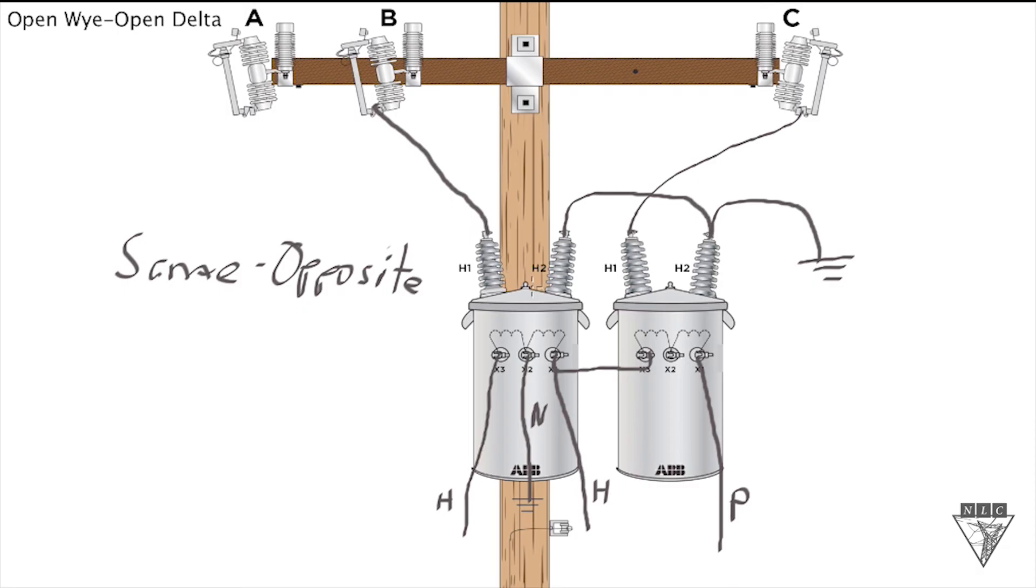Your primary side is the same—you're using the H2s connected together, those are the same. Your secondary side is opposite because you've taken an X1 and connected to an X3. It's called the same opposite connection. All right guys, that's it for this open Y open delta bank with the same opposite connection.